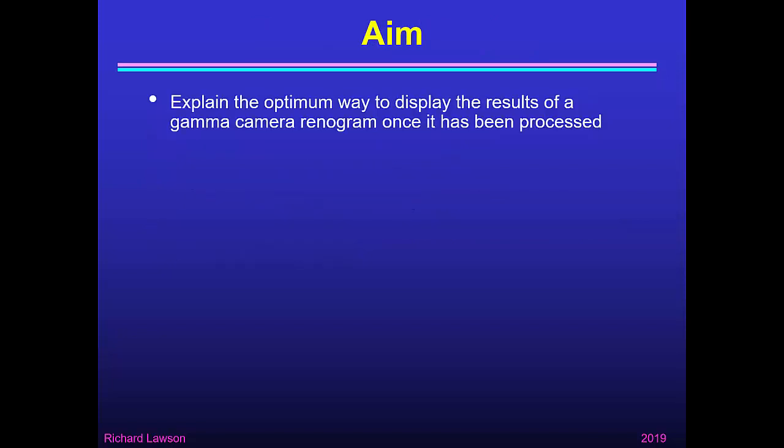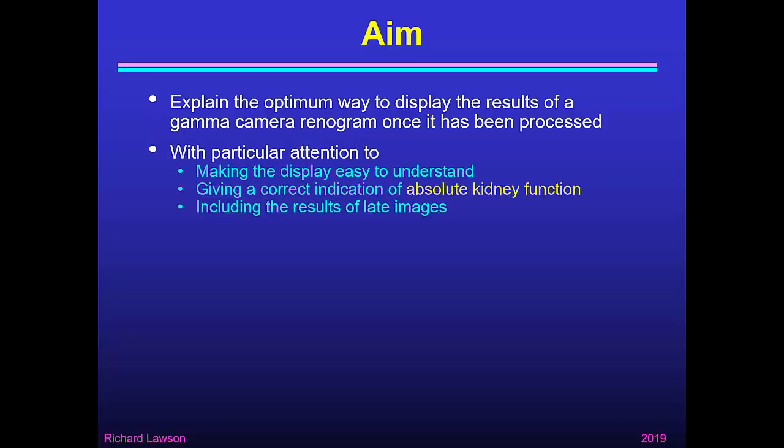The aim of this talk is to explain the optimum way to display the results of a gamma camera Rhenogram once it's been processed. I'll pay particular attention to making the display easy to understand, giving a correct indication of absolute kidney function — by which I mean how the kidneys perform compared with a normal kidney — and including the results of late images.